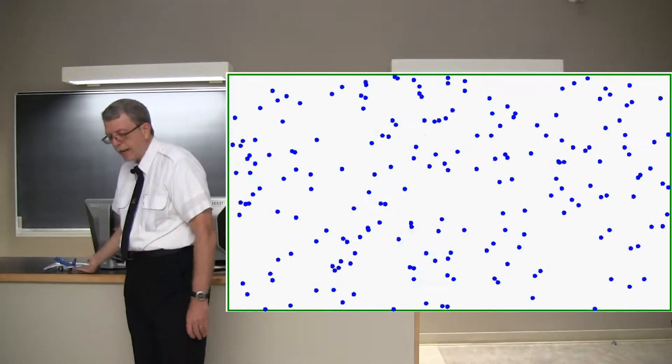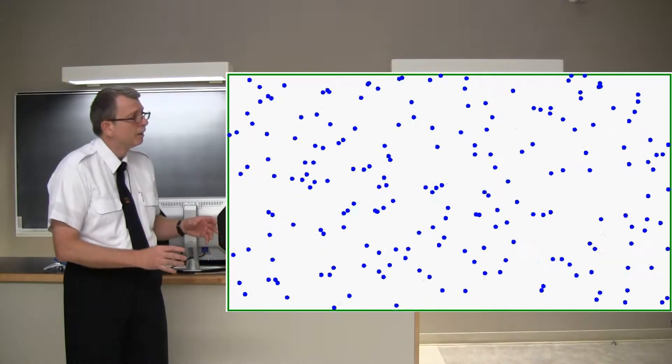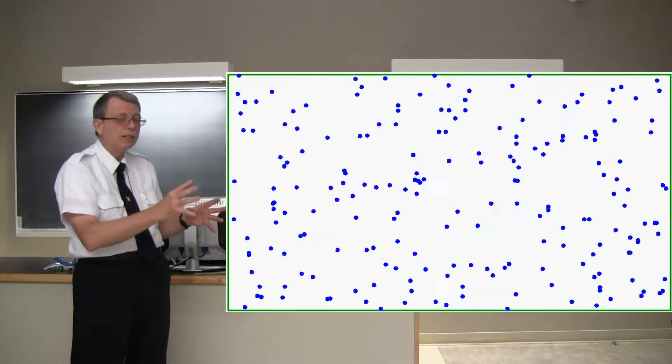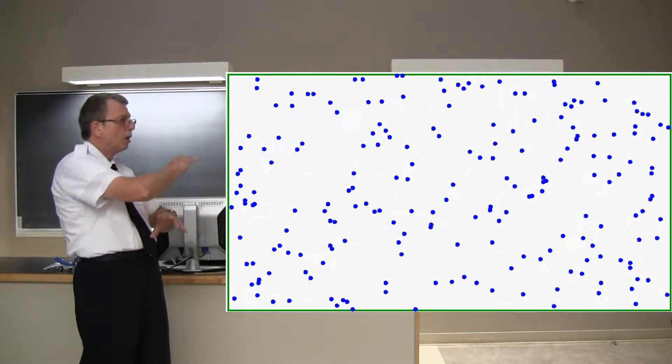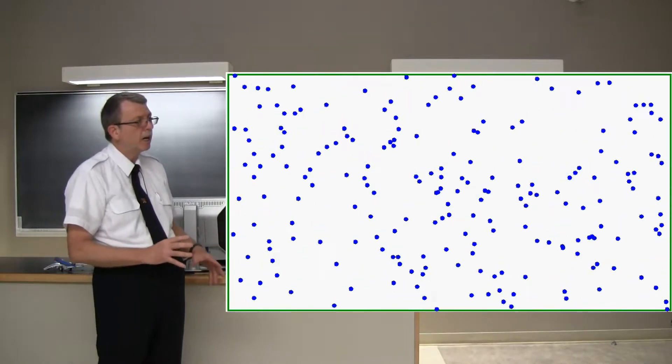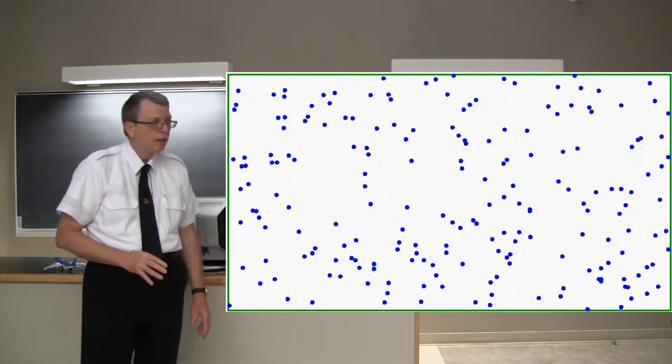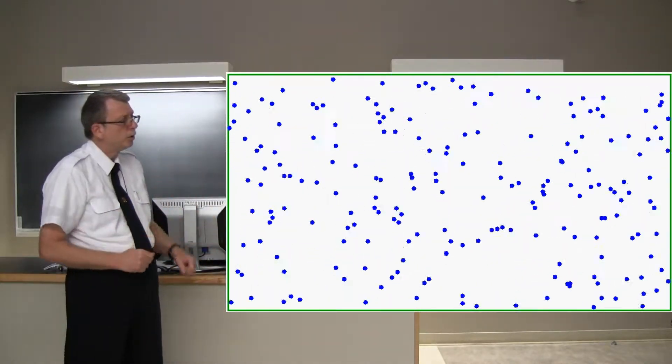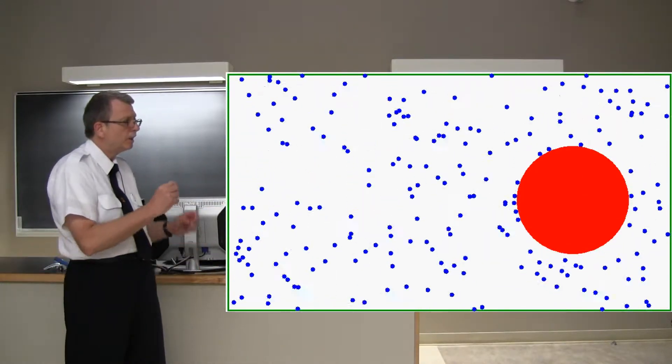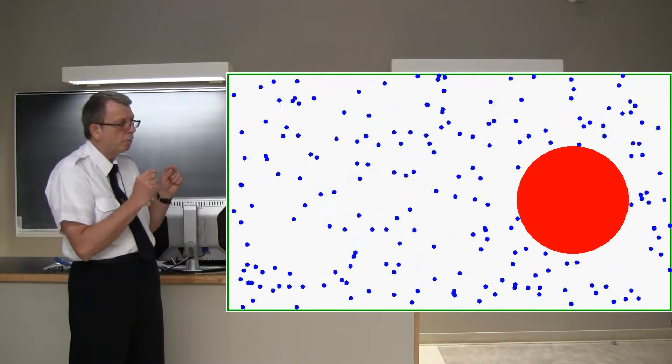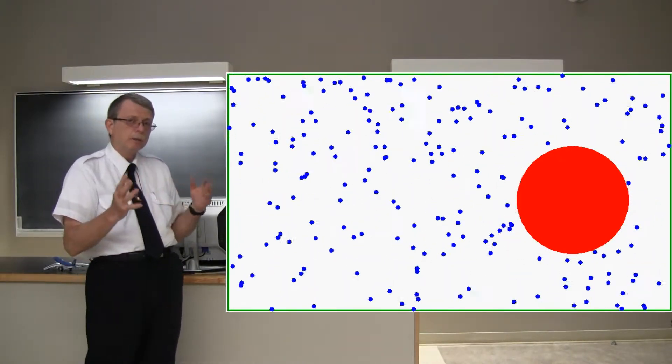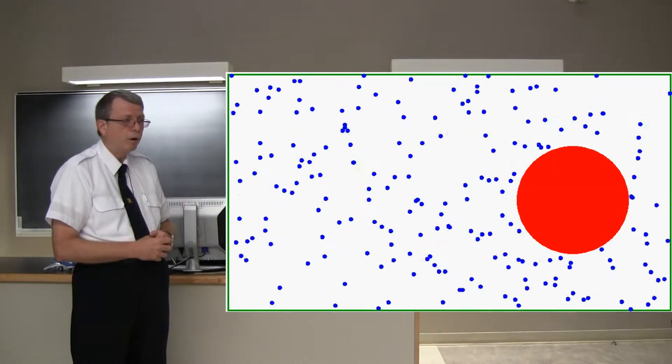Now have a look at this animation here for a second. You've seen this one before. It shows the kinetic theory of gases. All the blue dots are air molecules zip-zapping around at the speed of sound, bouncing off the walls. Now imagine we introduced a ball into this. So the red circle now represents the ball. And you can see the air molecules are bouncing off the ball. And therefore they're creating air pressure on that ball.